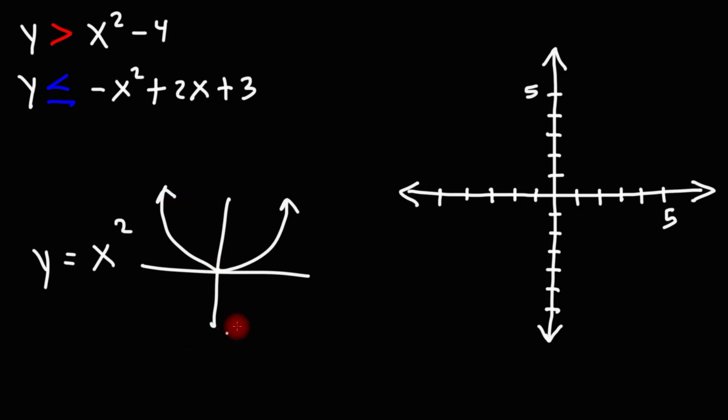x squared minus 4 is going to be a parabola that opens upward but shifts 4 units down. So it's going to look something like that.